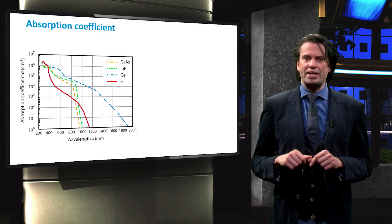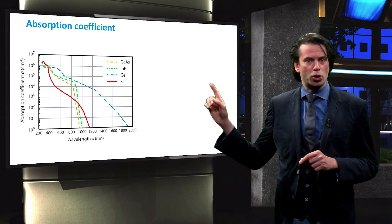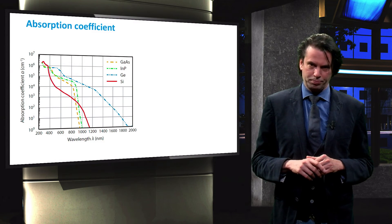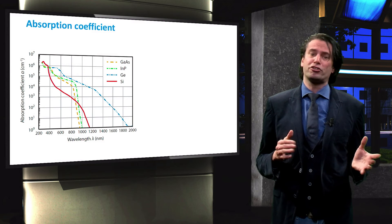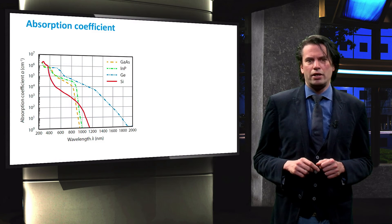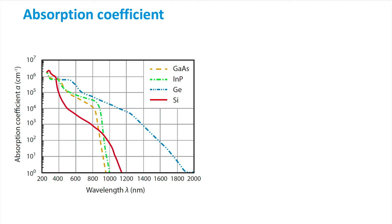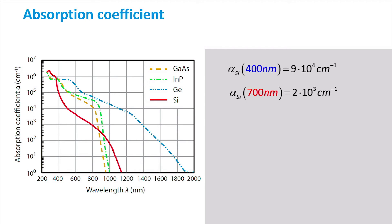To get better acquainted with light absorption in solar cells, we take a look at spectral absorption coefficient of several semiconductor materials. The absorption coefficient can vary orders of magnitude between semiconductors and even between photon wavelengths. If we focus for instance on the absorption of blue and red photons in silicon, we can read from the graph that the absorption coefficient for blue photons at 400 nm is about 9×10^4. The absorption coefficient for red photons at 700 nm is about 2×10^3.